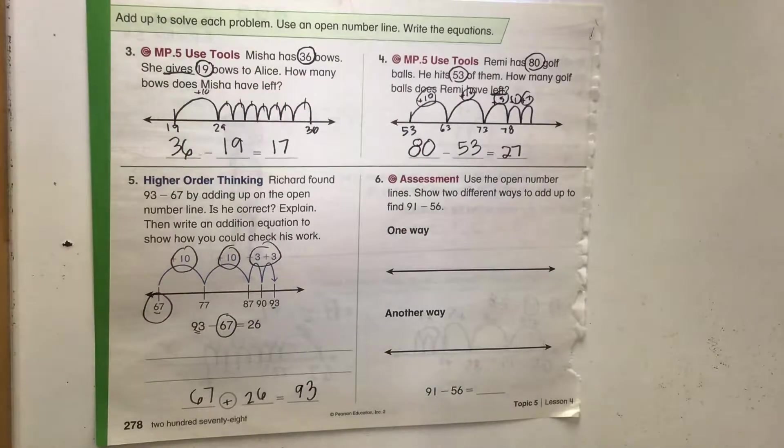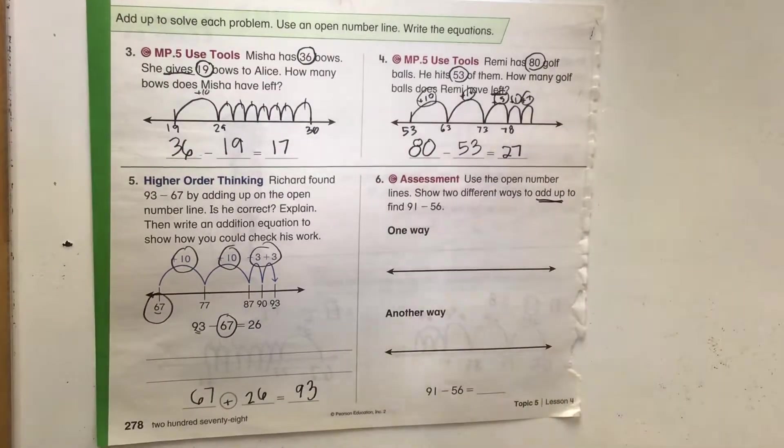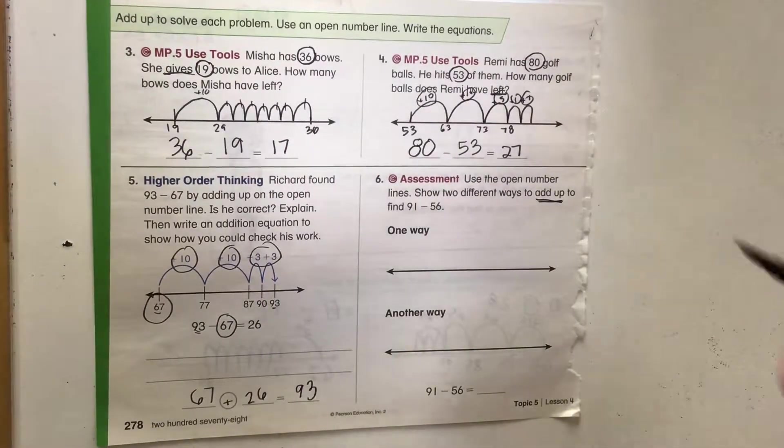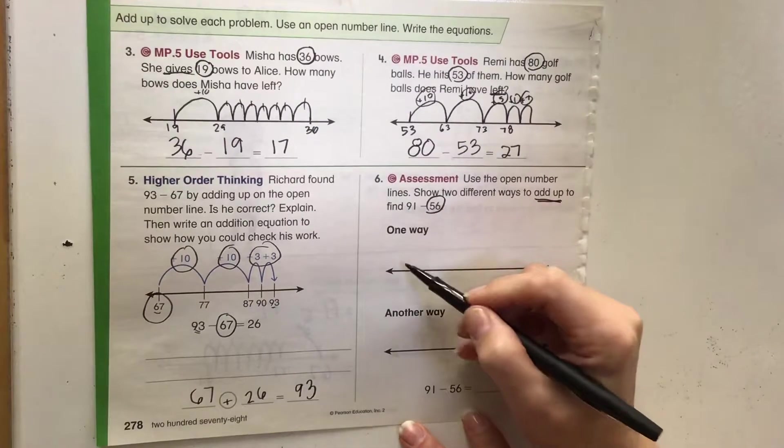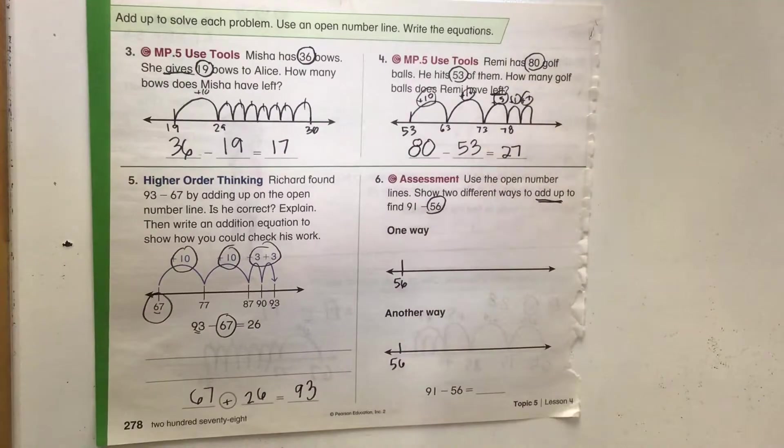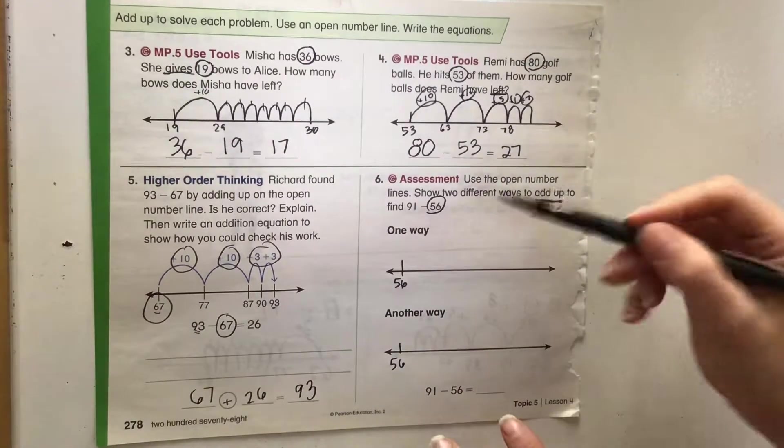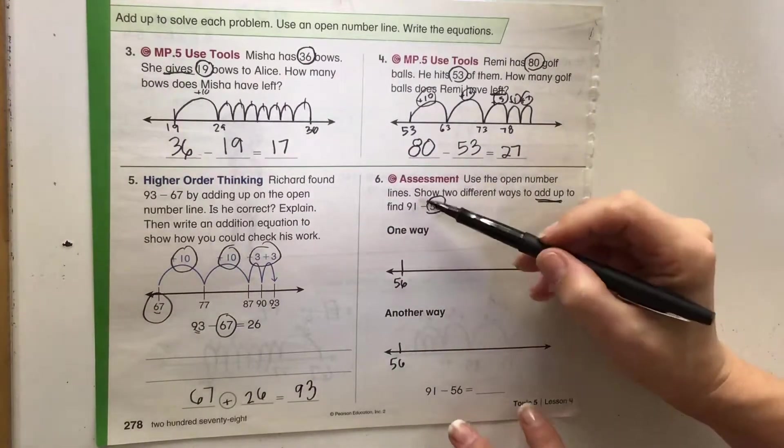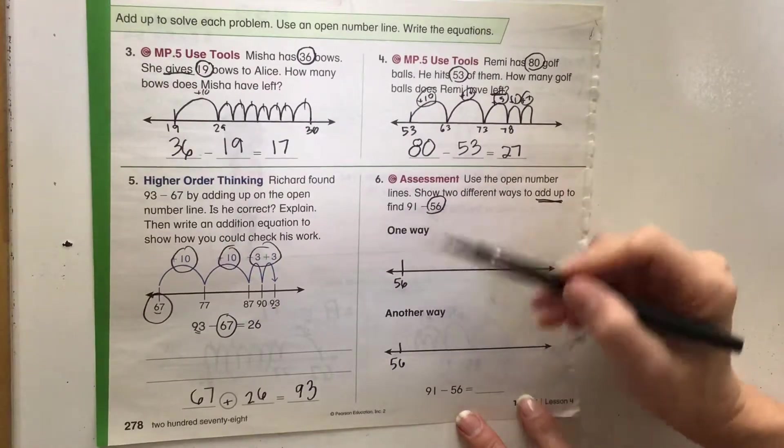All right, use the open number lines for our assessment here. Show two different ways to add up to find 91 plus 56. Now again, it's asking us to add up. So we're going to start at 56 on both number lines and we need to get to 91. So let's look at a couple of different ways. There's going to be lots of different ways, these are just two examples. We can't go higher than 91.